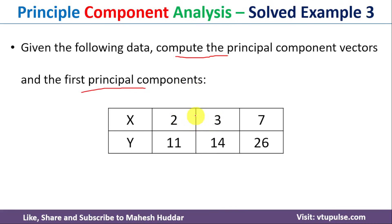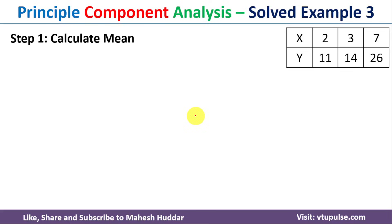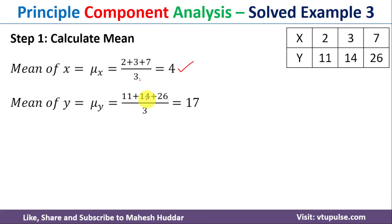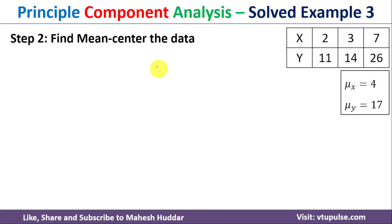In the first step of Principal Component Analysis we need to find the mean — that is, mean of x and mean of y. Mean of x is equal to the sum of all x values divided by the number of examples: 2 plus 3 plus 7 divided by 3, which equals 4. Similarly, mean of y equals 17.